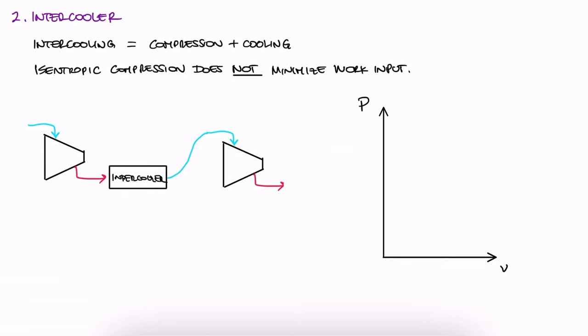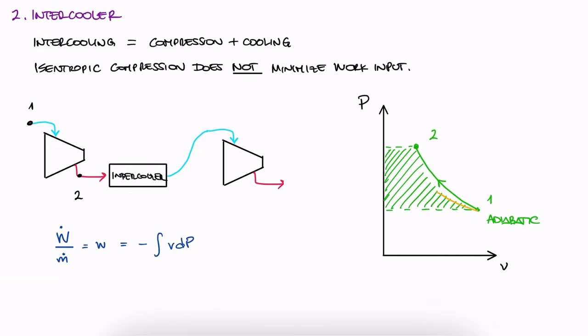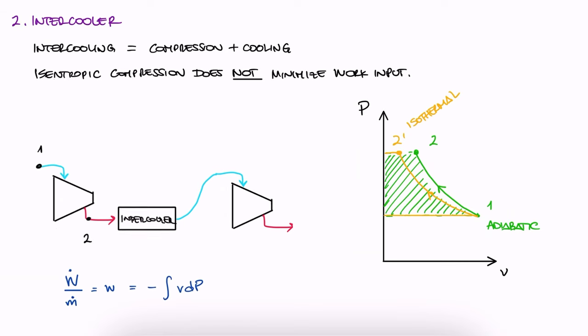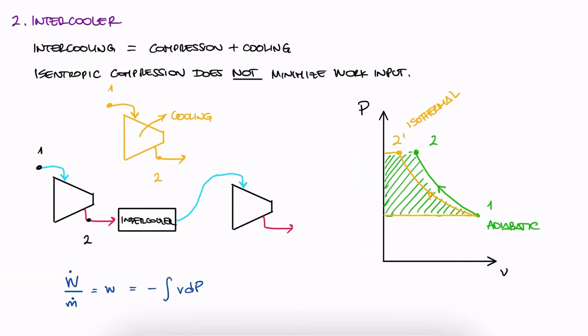On a PV diagram, we can draw an adiabatic compression process from state 1 to 2. Remember that the specific work required for this process is minus the integral of Vdp, which means the area left of the curve. What we're used to seeing is that an isothermal line would have a more gentle slope. This would be the process if we cooled while compressing, and it is indeed showing us a smaller quantity of specific work required between 1 and 2 prime. However, in reality...